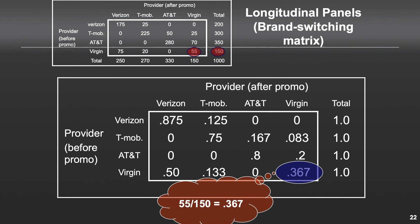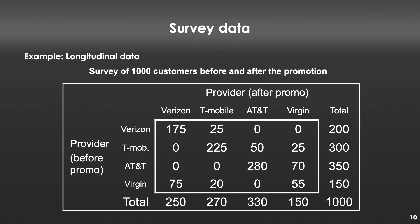That 36.7% tells us that 36.7% of Verizon's customers remained loyal during this time period. What's really telling is that if we had done this cross-sectionally, we'd have concluded nothing happened for Virgin — 150 customers before, 150 after. But seeing that switching behavior inside the matrix, we have a much richer understanding. In fact, Virgin churned customers like crazy, but also attracted lots of customers. Churn is expensive, attracting customers is expensive, and so despite the total picture looking like nothing happened, actually a lot happened.